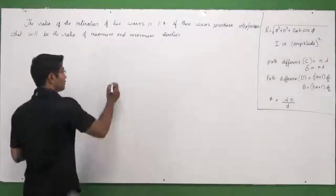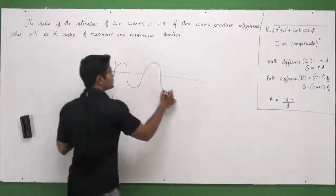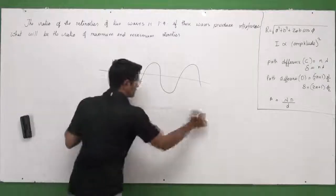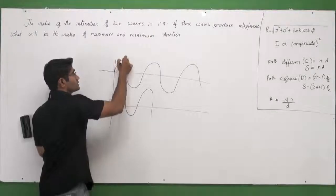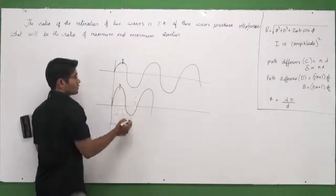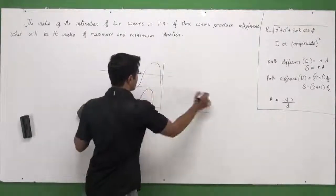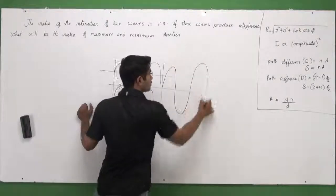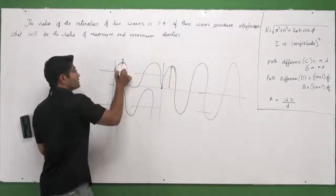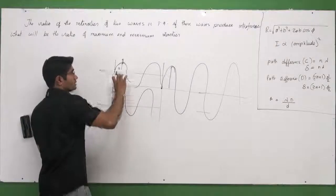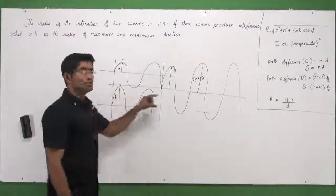First we understand what exactly interference is. If I have two waves which interfere in the same phase — meaning they go up and down together — this is called constructive interference. The resultant wave would be a bigger wave with a bigger amplitude. If this amplitude is a and this is b, the resultant amplitude would be a plus b when they are constructively interfering.